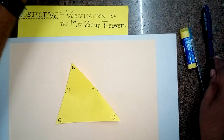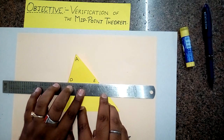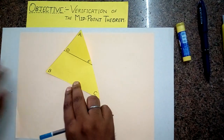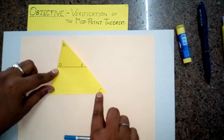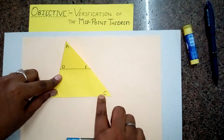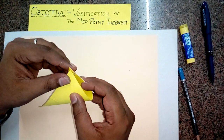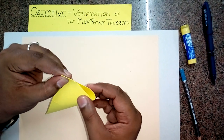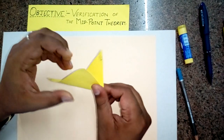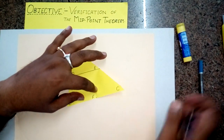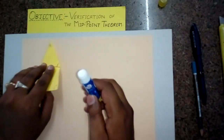Now since we need the line segment DE, let us join D and E. So we have got the line segment DE. Now we are going to prove that DE will be half of BC and parallel to BC. Since we need to compare DE with half of BC, let me obtain the midpoint of BC by overlapping B with C and folding to get the midpoint. I am naming it F. So we have got the triangle, the midpoints, and the line segment DE.